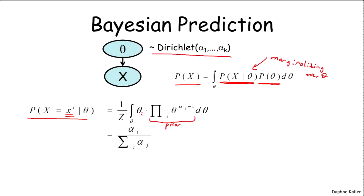And we multiply the two together, integrate out over the parameter vector theta, which in this case is a k-dimensional parameter vector.